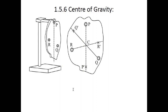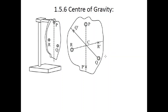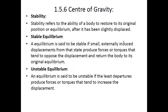Using the plumb line, hang the lamina from another position B — make another hole and repeat the process. Then make a third hole and hang the lamina from that position, repeating with the plumb line. The point at which all three lines intersect is the center of gravity or center of mass for that lamina. You make holes at positions P, R, and Q, hang the lamina one by one, mark lines using the plumb line, and point C where all three lines cross is the center of gravity.